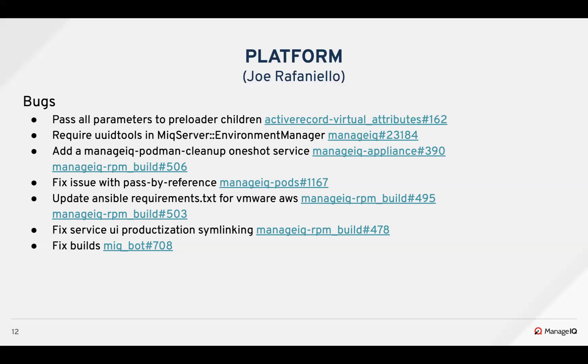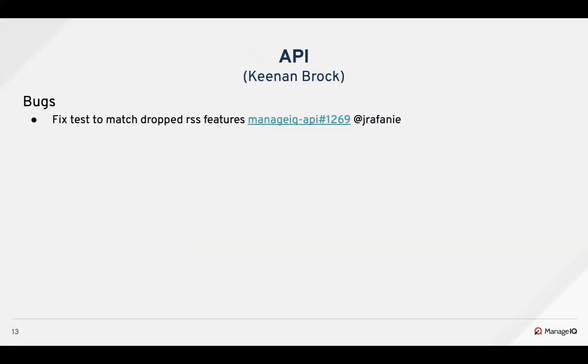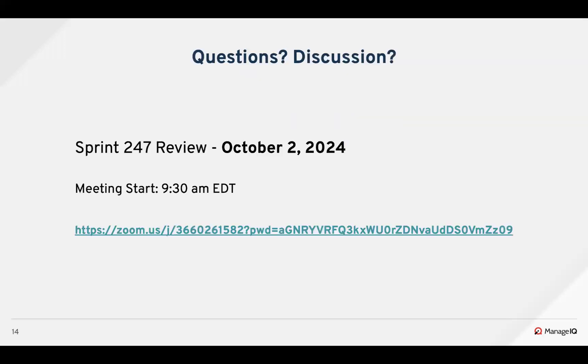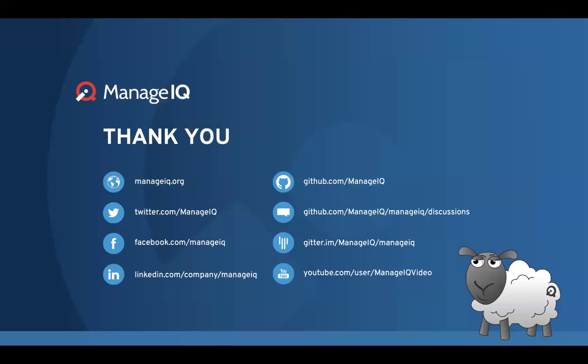As part of the RSS modifications that Joe made, over in the API we modified the tests to no longer reference RSS. Pretty straightforward. That's all for our Sprint 246 review. Our next sprint review, Sprint 247, will be on October 2nd at the regular place and time. I'd like to thank all the presenters today, all the contributors to ManageIQ, and our community. Thanks a lot.